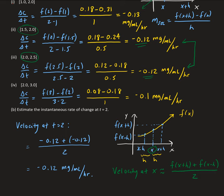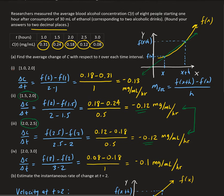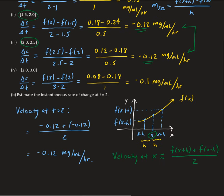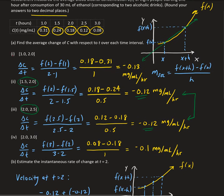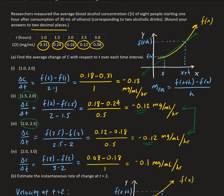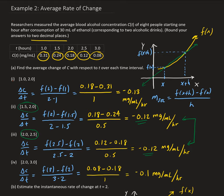We can estimate the instantaneous rate by taking the average of the surrounding values at that point. The surrounding values of 2 are 1.5 and 2.5, so we take the average of the corresponding values of C — the blood alcohol concentration — and divide by 2. For Part A, the average rate of change is based on the idea of the slope of the secant line. Thank you.